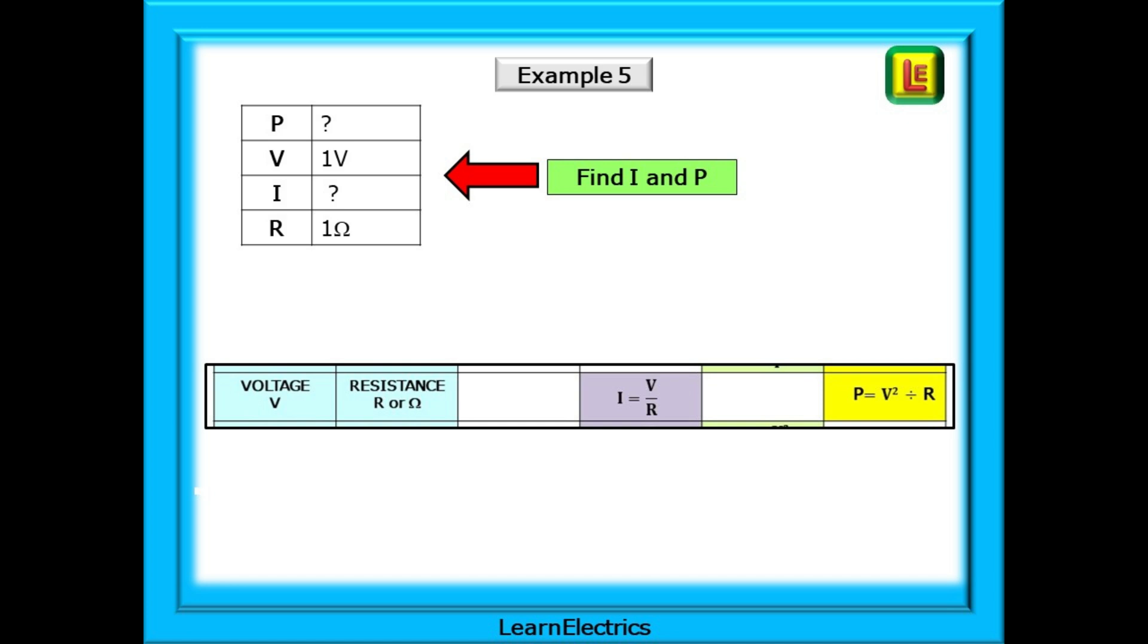And now example 5. And this is not a trick question. If we are told that the voltage is 1 volt and the resistance is 1 ohm, the question asks us to calculate the power P and the current I. Pause the video and calculate your answer.